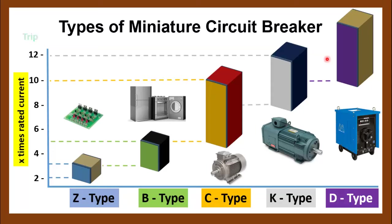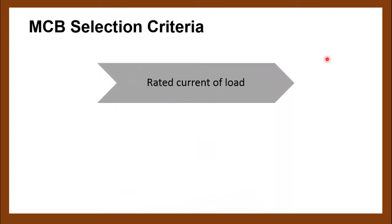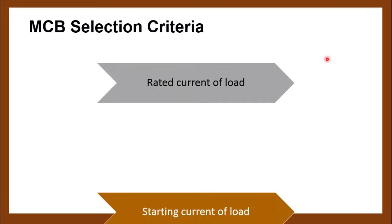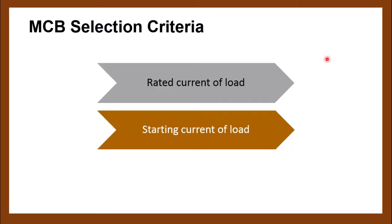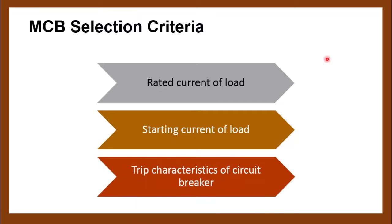I have explained all the types of miniature circuit breaker in detail and shown which types of load each is suited for. It's very important for the designer to select the right type to avoid nuisance tripping. The MCB selection criteria are: the rated current of the load, the starting current of the load, and the trip characteristic of the circuit breaker, which defines how much current the breaker allows before breaking the circuit.